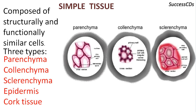Sclerenchyma cells are dead. They are narrow and elongated and are found near vascular bundles, veins of leaves, etc. Epidermis covers the entire body of the plant and is similar in structure to parenchyma. They protect the plant from injury, germs, and sometimes water loss. Lastly, cork is a simple tissue which consists of dead cells with no intracellular spaces. They form the outer layer of old trees.